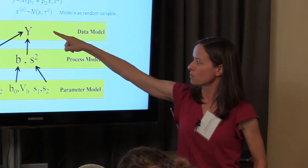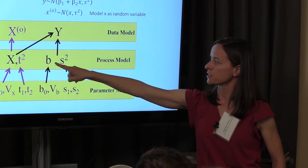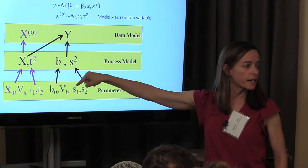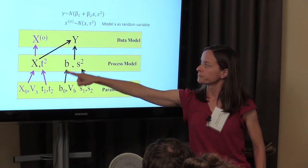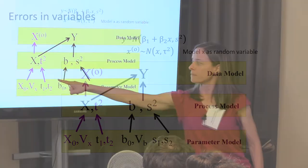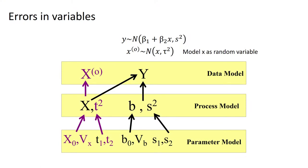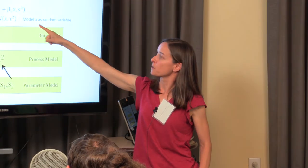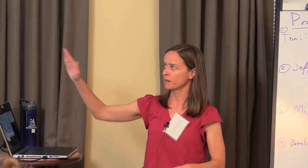Errors in variables is a way to deal with the fact that we often have uncertainty in our predictor variables as well as in our response variables. The classic assumption is that it's all in the response variables, but in ecology, the reality is that it's often also in our predictor variables. The Bayesian framework, because of its probabilistic structure, allows us flexibility to build that into a model. We've got the same kind of linear model, but also a model for the predictor variable X, described by its own set of parameters, which also informs Y. We're actually modeling X as a random variable — now we're moving into latent variables.